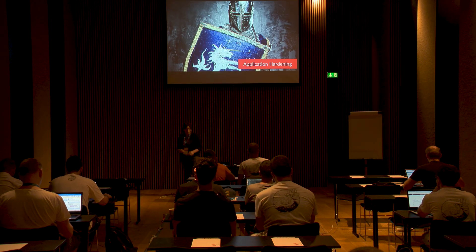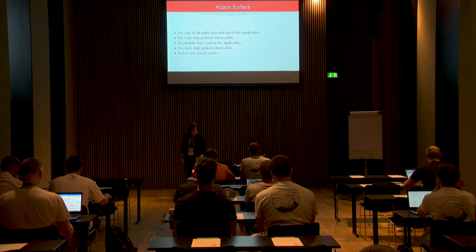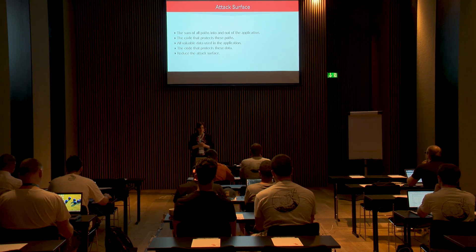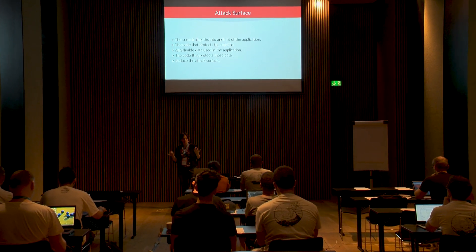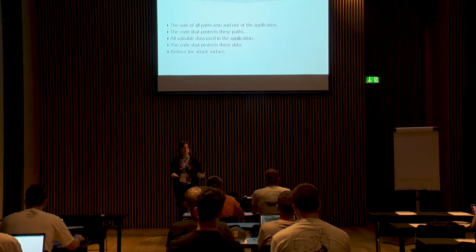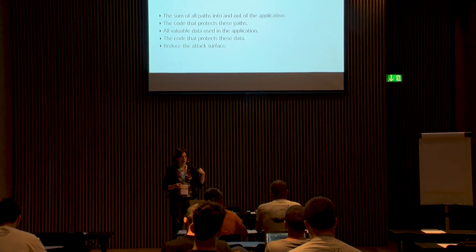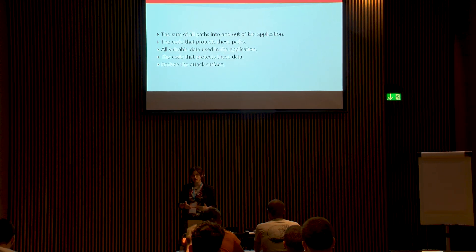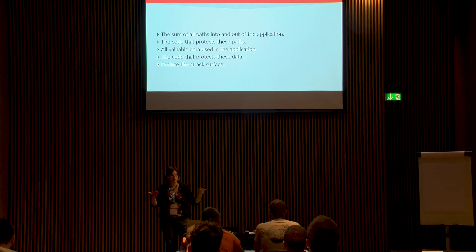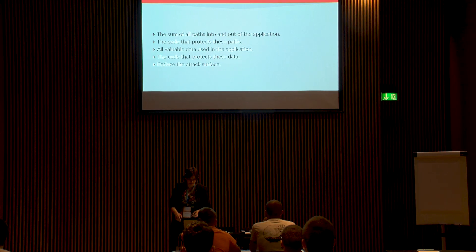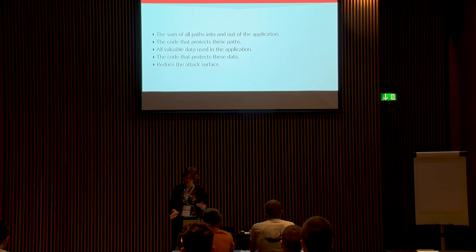Application hardening is all about the attack surface. An attack surface is the sum of all paths into and out of the application. If there's a port open, that's a path into your application. A form that people submit, any sort of input, an FTP server where people deposit files — all of these are ways people can get into your server. Paths out are anything that goes out that people can intercept and also use to attack you. Attacking doesn't necessarily mean DDoSing — there are all sorts of attacks.